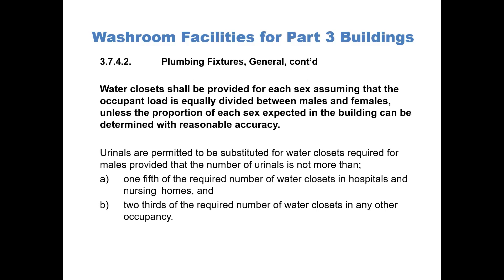Article 3742 goes on to say that water closets shall be provided for each sex, assuming that the occupant load is equally divided between males and females, unless the proportion of each sex expected in the building can be determined with reasonable accuracy. Urinals are permitted to be substituted for water closets required for males, provided that the number of urinals is not more than one-fifth of the required number of closets in hospitals and nursing homes, and two-thirds of the required number of closets in any other occupancy.